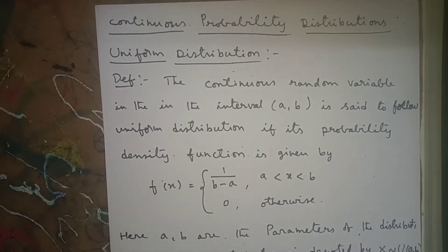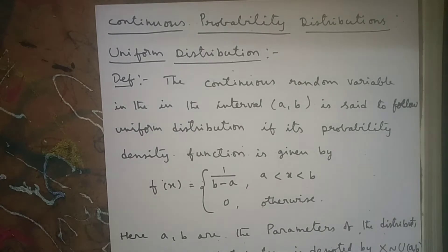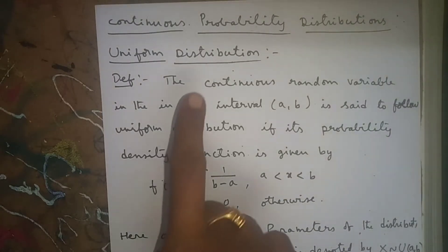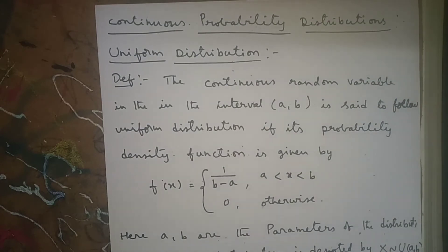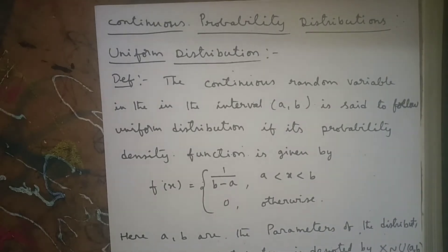Hello everyone. Today I am going to start continuous probability distributions. Under continuous probability distributions we have uniform distribution, exponential distribution, and normal distribution. X takes the values between certain limits, then we say that the random variable is called a continuous random variable.